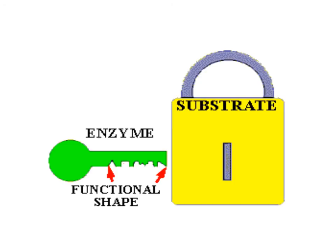Smaller keys, larger keys, or incorrectly positioned teeth on keys are similar to incorrectly shaped or sized substrate molecules, which do not fit the enzyme. Only the correctly shaped key opens a particular lock. Just as the key to your house will only open your door and not your neighbor's, enzymes will only react with the substrate that fits into their active site.